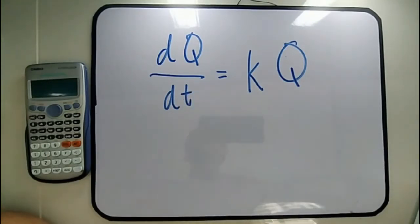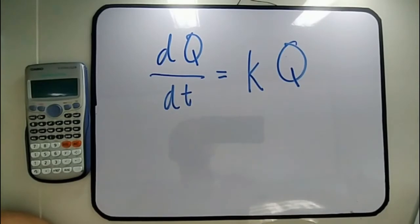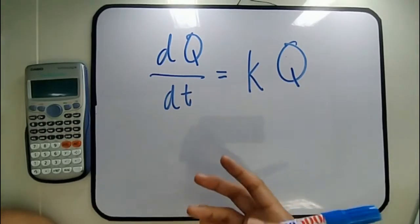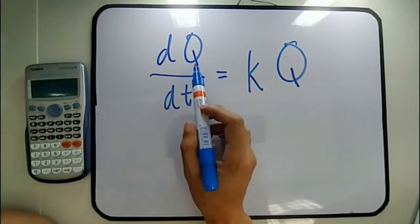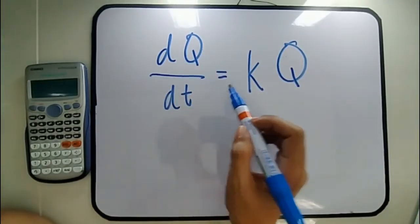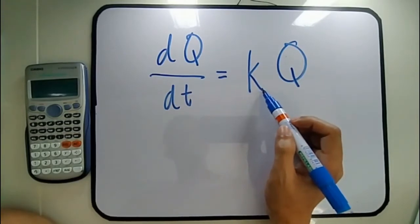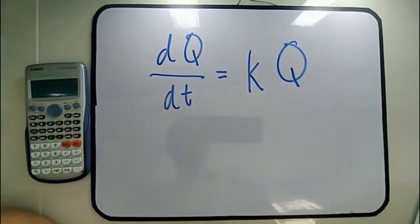In this particular video, we are going to discuss radioactive decay. A radioactive material or element is said to be radioactive if it is unstable — its mass decreases over a period of time. The concept is that the time rate of change of the amount of the substance Q with respect to time is directly proportional to the amount of the substance Q at any time T.